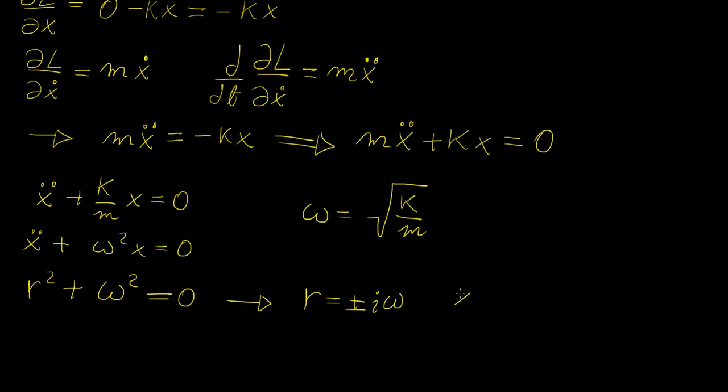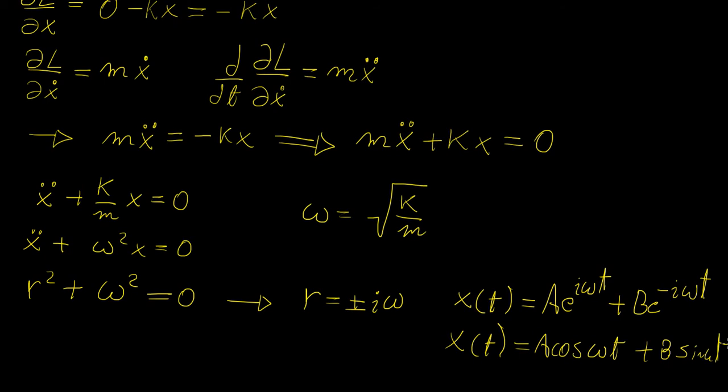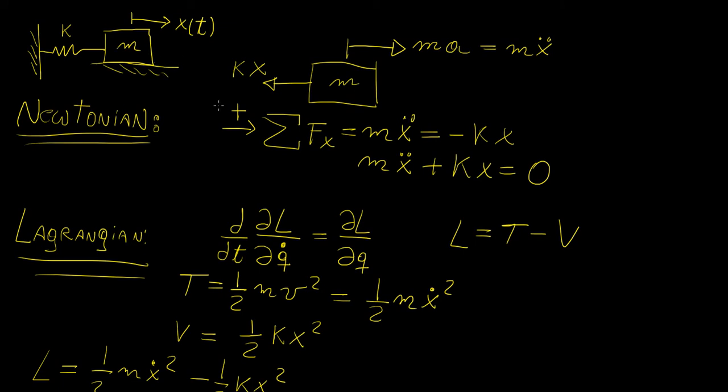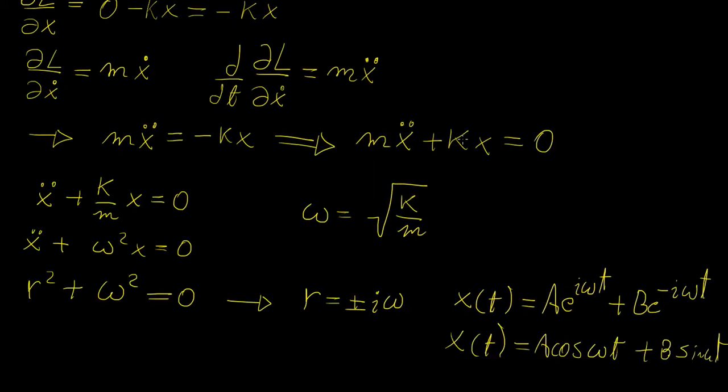and this implies that the solution to the system is going to be equal to some constant a times e to the i omega t, plus b e to the minus i omega t. Depending on initial conditions we can get different things for this, but we can also write it in terms of cosine, so a cosine omega t plus b sine omega t. We know that this is going to be some sort of simple harmonic motion, because there's no energy dissipation in the system. The energy is just converting from potential energy in the spring to kinetic energy of the mass, and there's no kind of energy absorption or loss happening in the system, so the system is just going to keep oscillating back and forth.